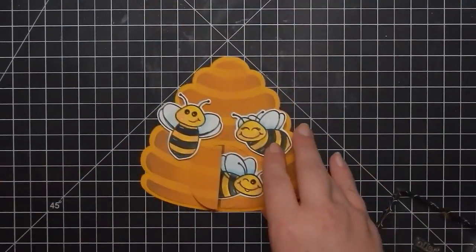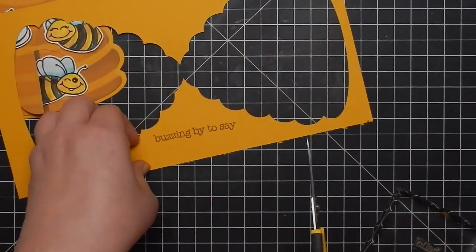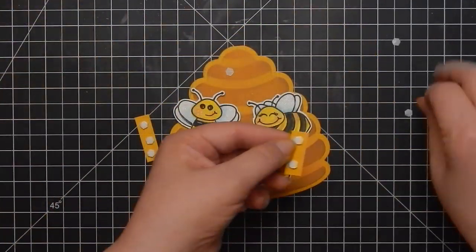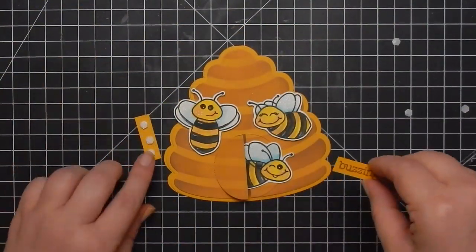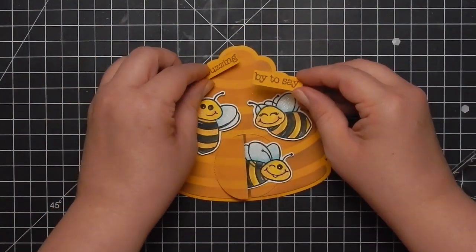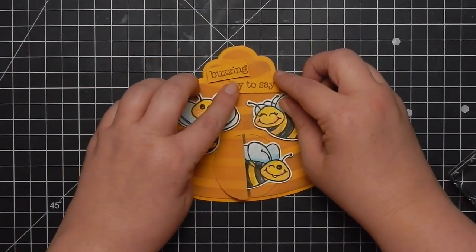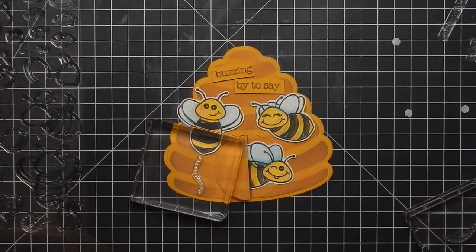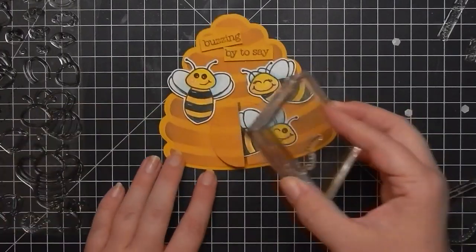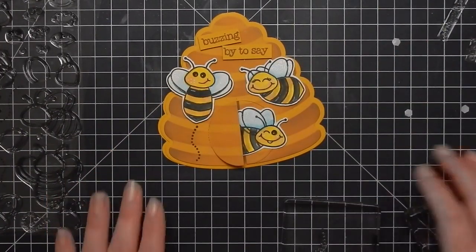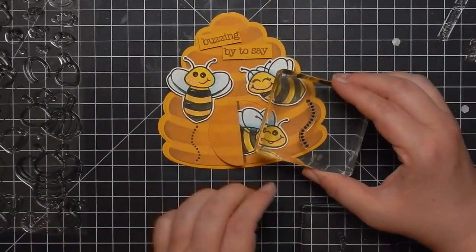I go ahead and stamp out my sentiment with Gathered Twigs onto some Crushed Curry cardstock. I stamp the word "hello" again with Gathered Twigs, and then I cut "buzz by to say hi." I just cut it in half, pop it up, and add it to the front. I cut it in half just to allow room so there wasn't a lot overhanging.